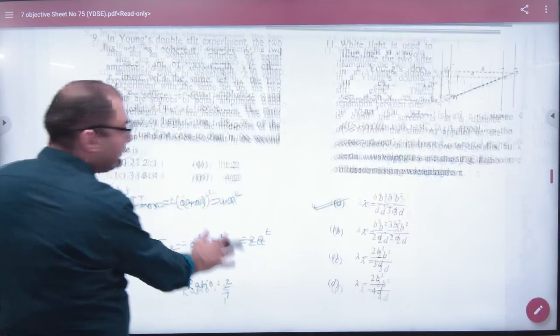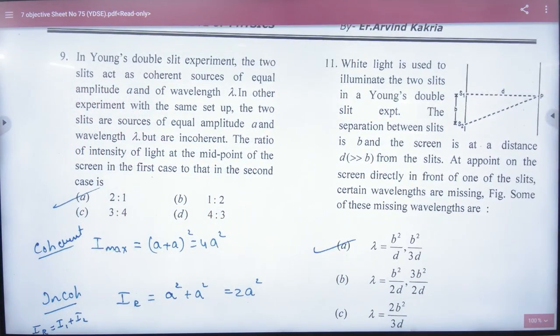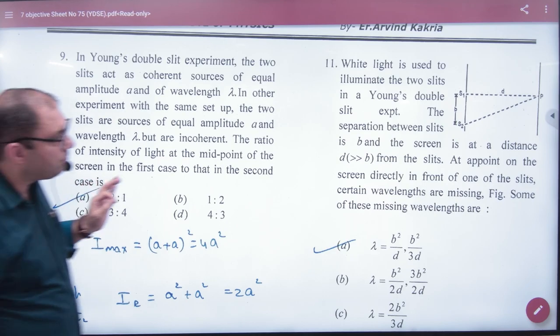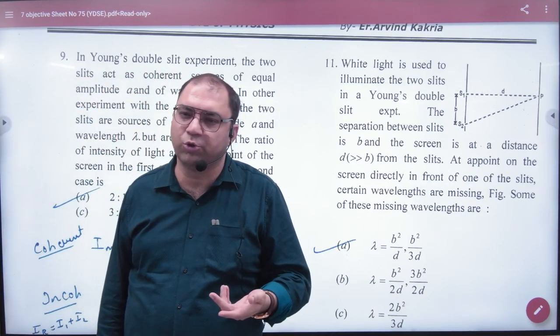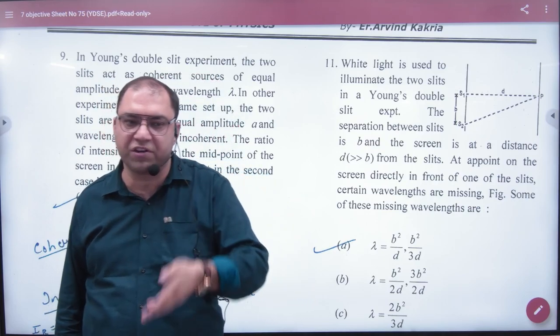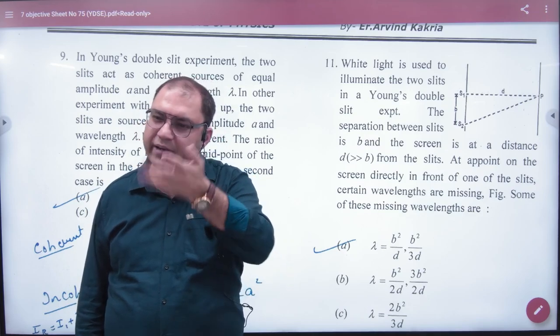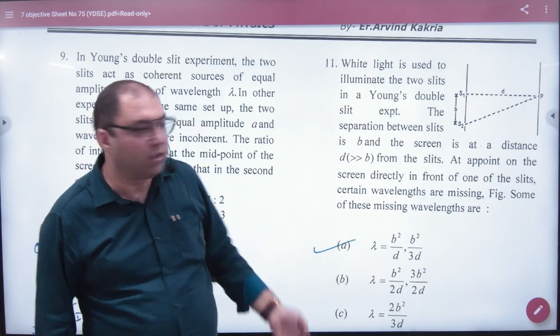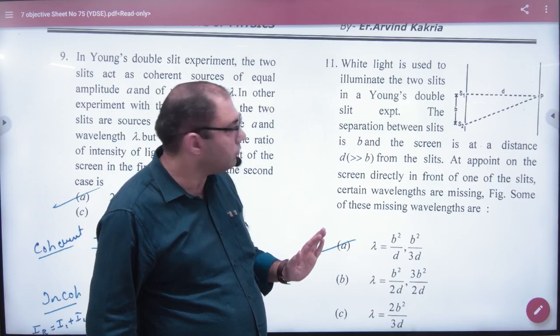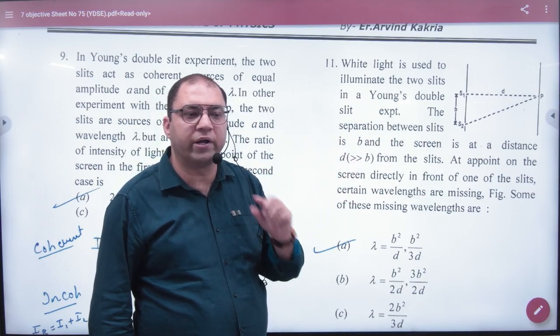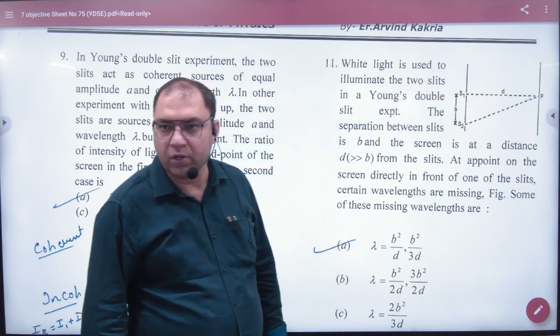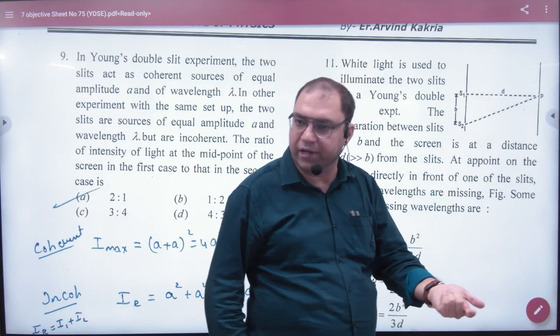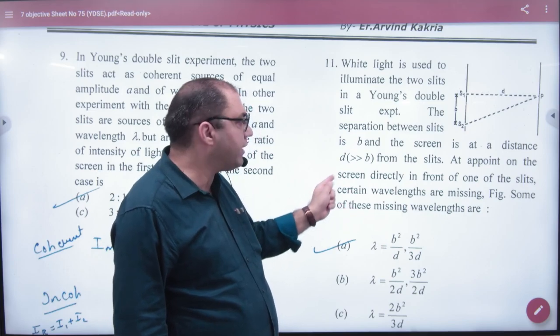Next question. White light. White light is used. The separation between slits is the small d, and the distance to the screen is the capital D. Don't confuse small d and small b. He is saying that a point was seen directly in front of one of the slits. So we take a point P in front of one of the slits.